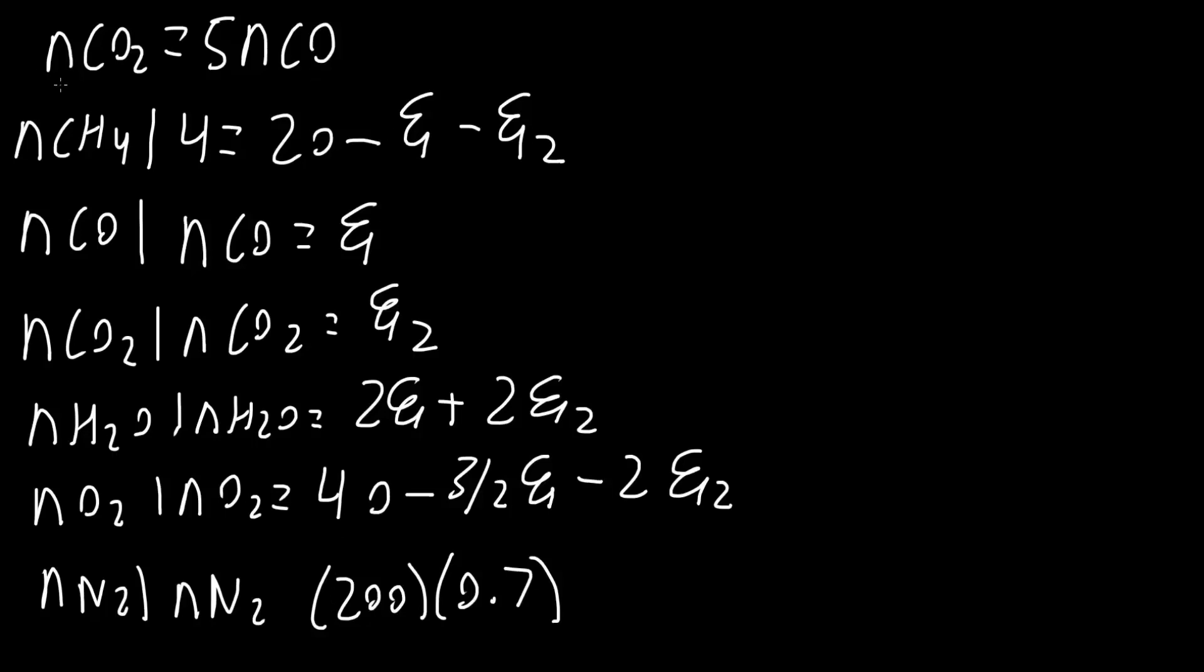And how many unknowns? So CO2 is one, CO is two, extent of reaction one is another one, three, four, five, six, seven. So we have seven things that we need to solve, and we have seven equations.